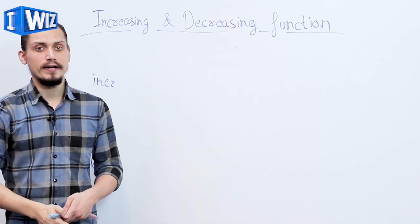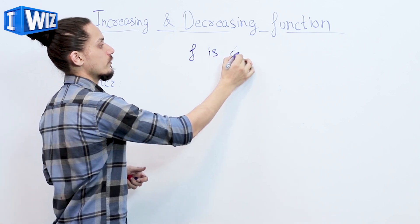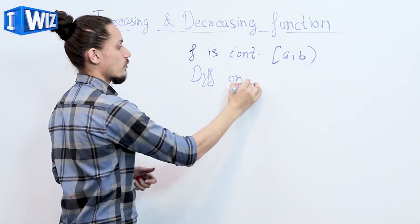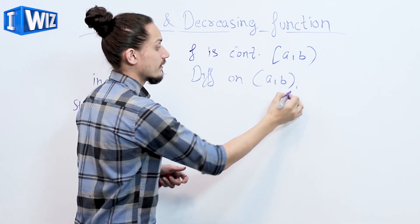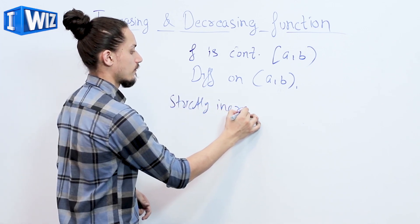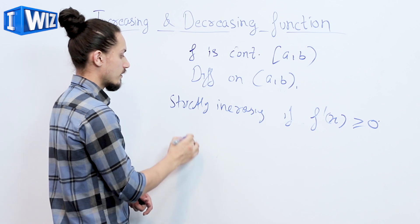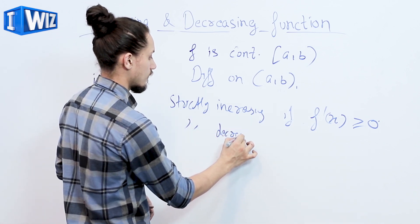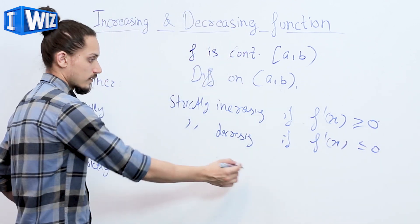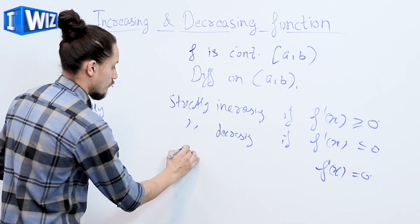There is another method to find out if a function is strictly increasing or strictly decreasing. If a function f is continuous on a closed interval [a, b] and differentiable on open interval (a, b), then f is called strictly increasing if f'(x) is greater than zero, strictly decreasing if f'(x) is less than or equal to zero, and constant if f'(x) equals zero.